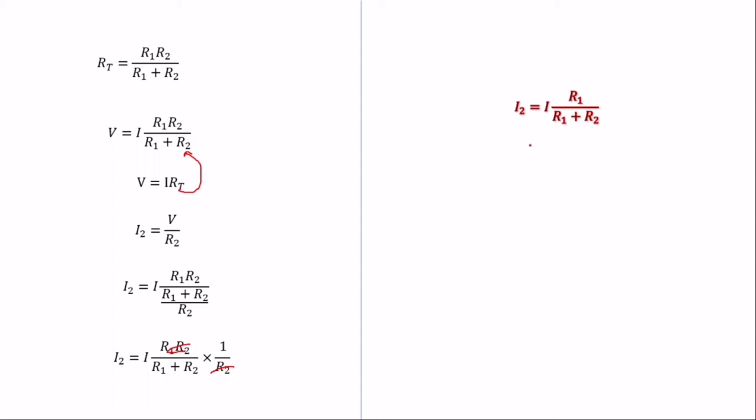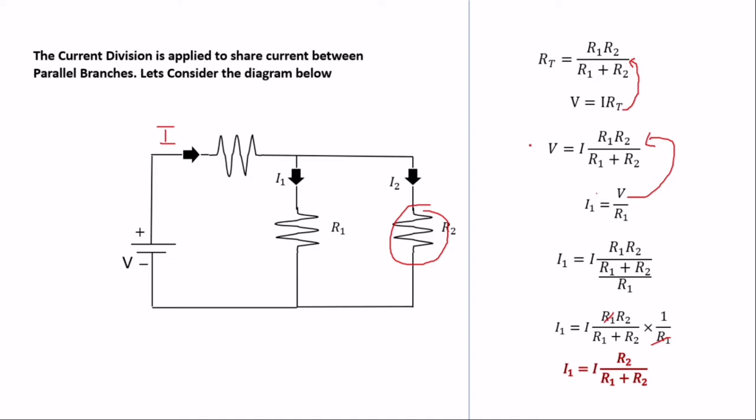There are two formulas when solving current division. Make sure you have these in your head. When a question is given using current division, you must reduce the diagram to this standard form first — combining series resistors so you end up with two parallel resistors.